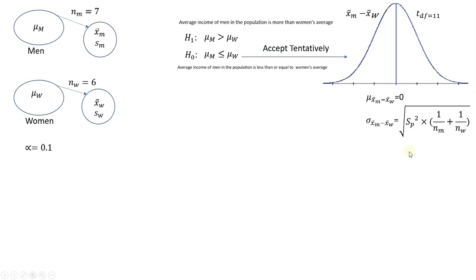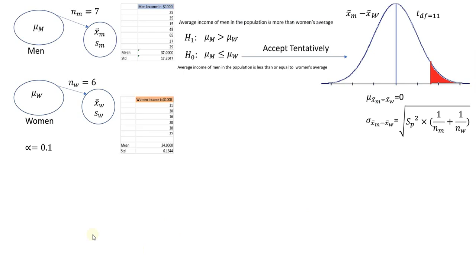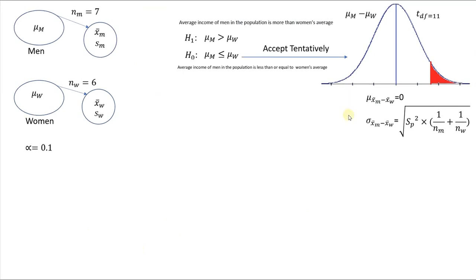sp squared is the pooled variance, and it's nothing other than the weighted average of the sample variances. At this point, we will ask our friend: if we take two samples, one from the population of men and one from women...